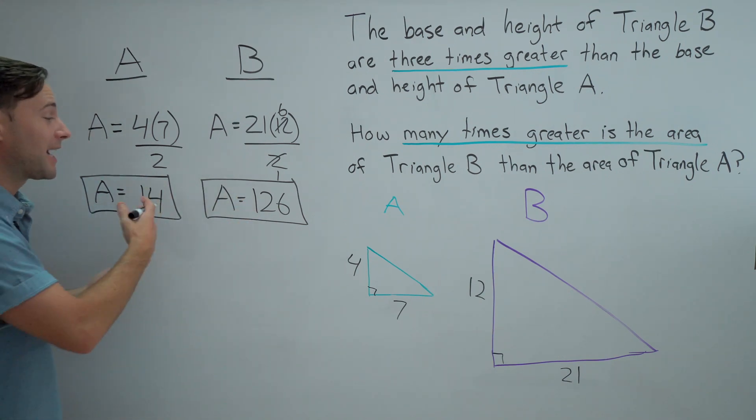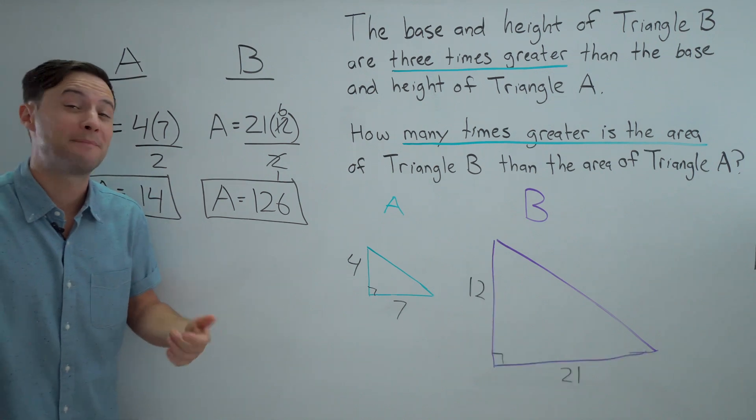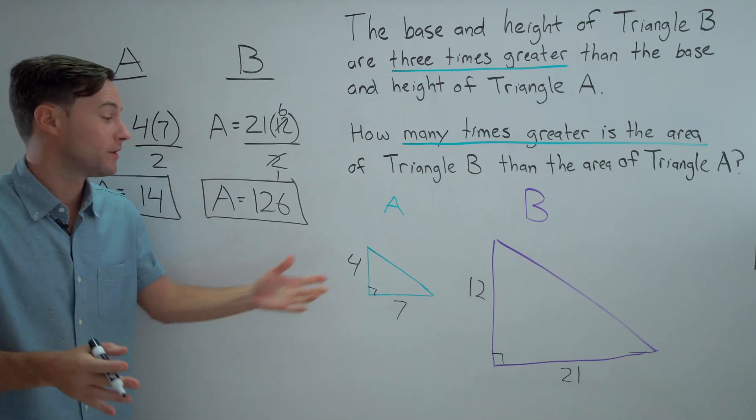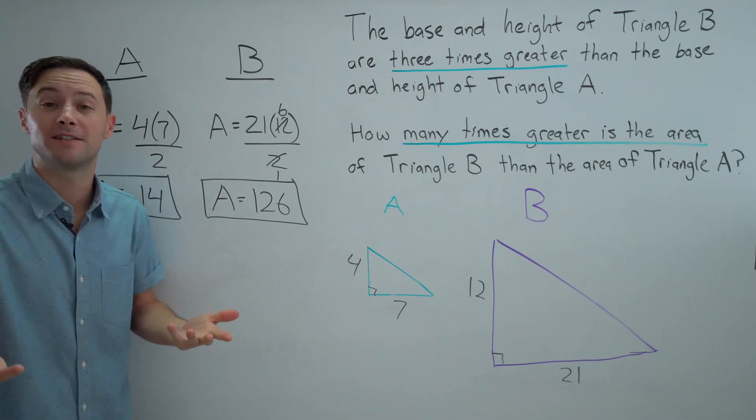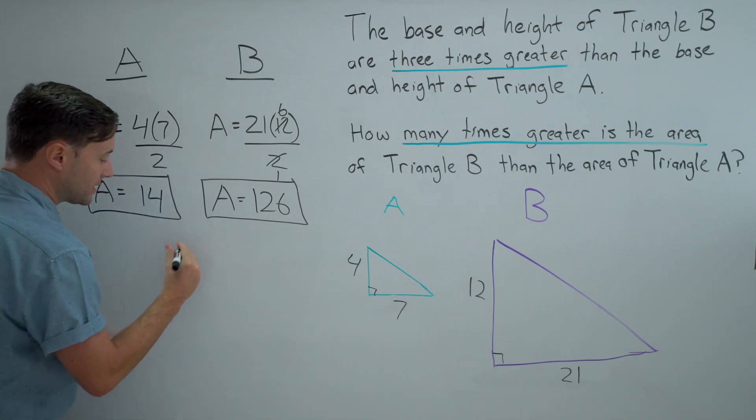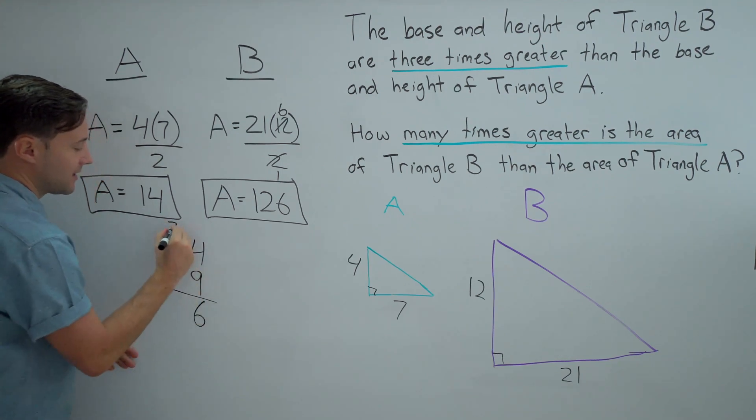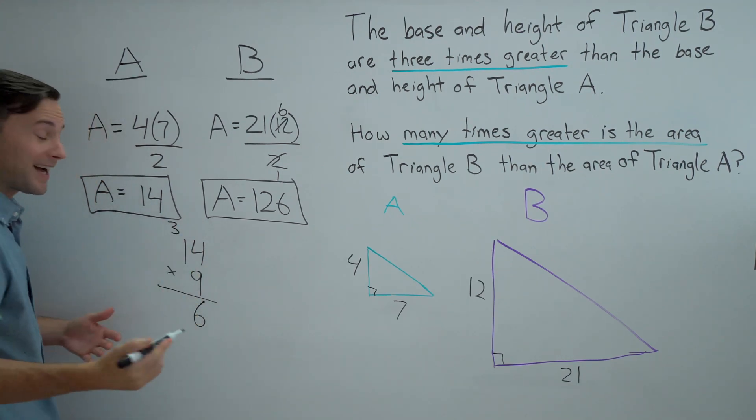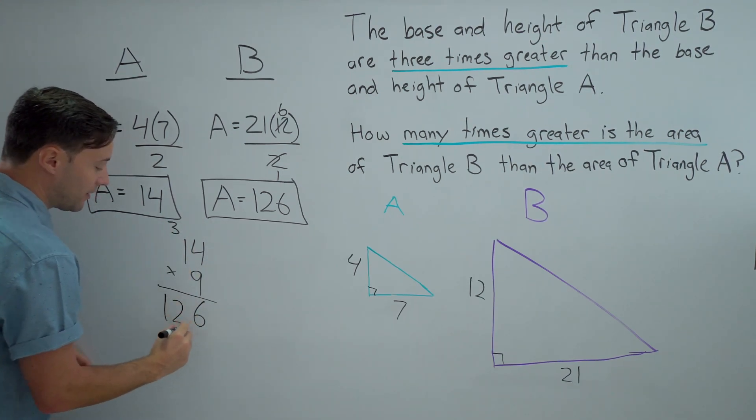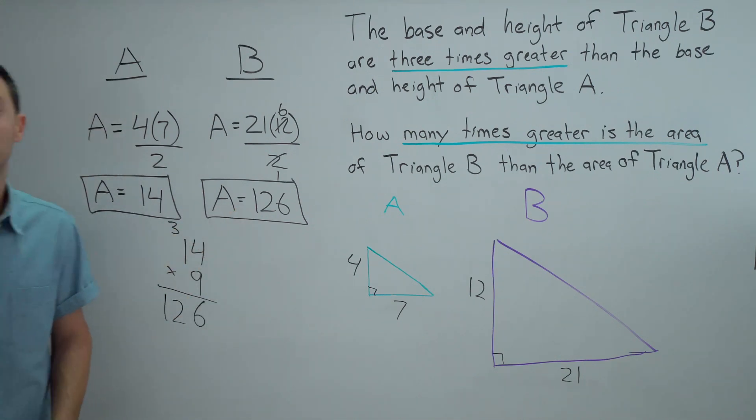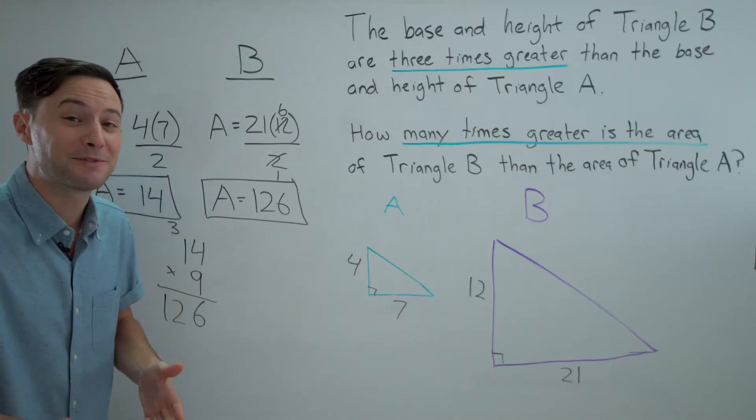And again, the question, how many times greater? Last time it was nine times greater with the original numbers we chose. Let's see if it's still nine. Well, 14 times nine. Four times nine is 36. Carry the three. Nine times one is nine. Plus three is 12. And yeah, we get 126. So we got nine times greater again.